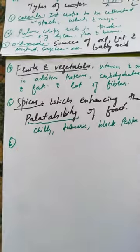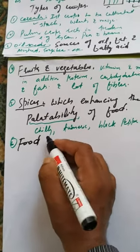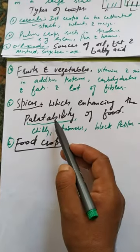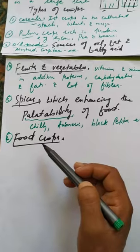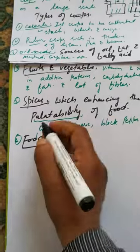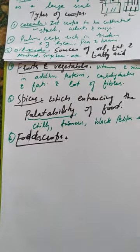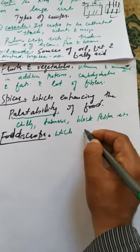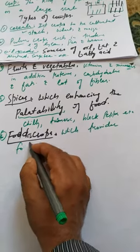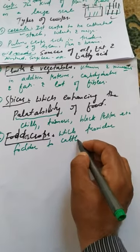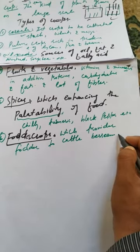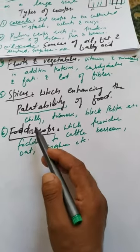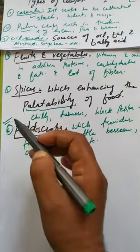Another type is fodder crops. Fodder crops are those crops which provide fodder to cattle — that is, food for cattle. Examples include bursim, oat, sorghum, etc. So these are all the fodder crops. Fodder crops are those crops which provide fodder to the cattle.